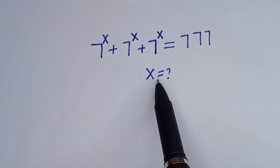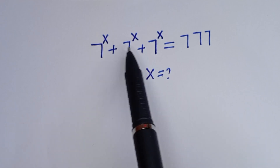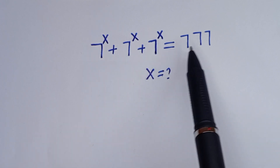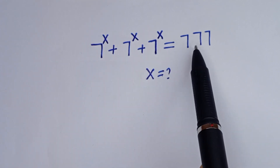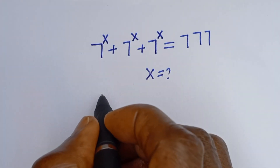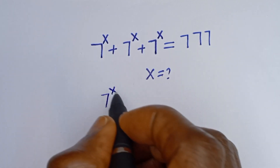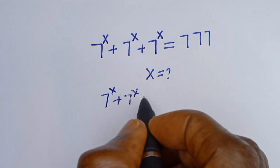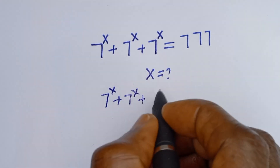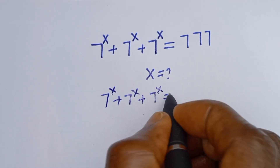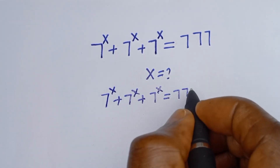Hello. How to solve for s in this equation: 7 to the power of s, plus 7 to the power of s, plus 7 to the power of s, is equal to 777.